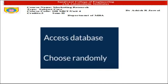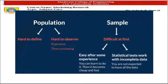So what is the best way to collect the information? I can collect sample information by going directly to the university administration, asking for access to the database, and randomly choosing students to complete the survey. From this, we can conclude: population is hard to define and hard to observe, which means it is expensive and time-consuming. Whereas sample is difficult at first but easy after some experience — it becomes economical and fast. Statistical tests work with incomplete data; you are not expected to have all the data. In population, we need all the data.